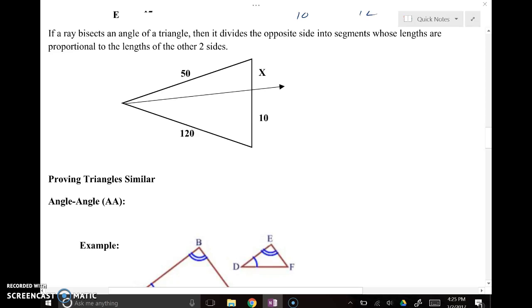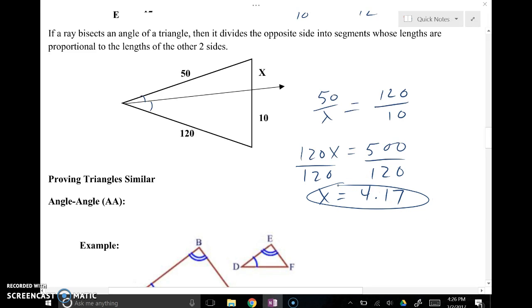Alright, last thing I want to point out, if you have a ray that bisects an angle, so a ray that cuts that angle into two equal parts, it separates the triangle proportionally, meaning this side and this piece should be equal to this side and this piece. So the side of the triangle that didn't get intersected by the ray and the piece that's on its same side. So 50 to X should be the same as 120 to 10. That ratio should be the same. And that's what I can use to solve. So 120 times X is equal to 500. Divide both sides by 120, and 500 divided by 120 is 4.17.